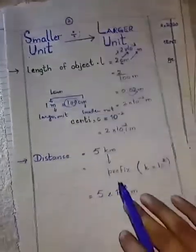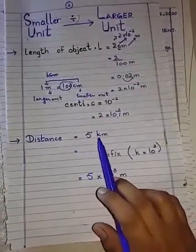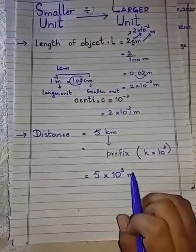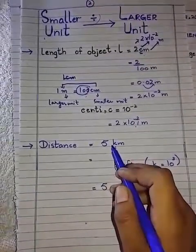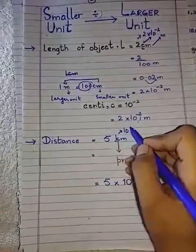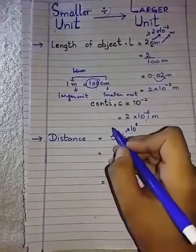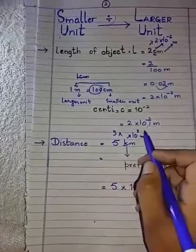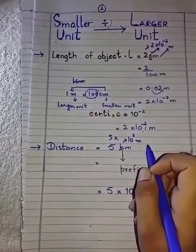For example, if distance equals 5 kilometers and we want to convert it into meters, simply replace the prefix 'kilo' with its power of ten. Kilo equals 10 raised to power 3, so 5 kilometers equals 5 × 10³ meters.